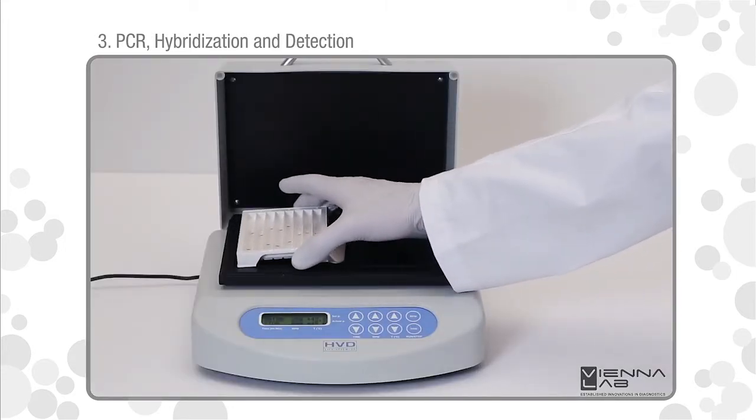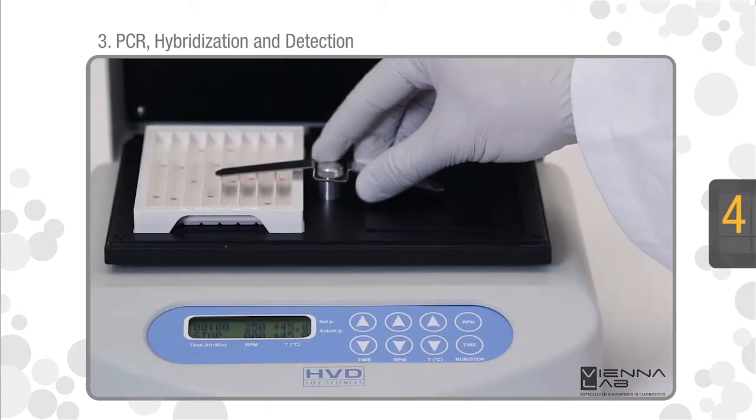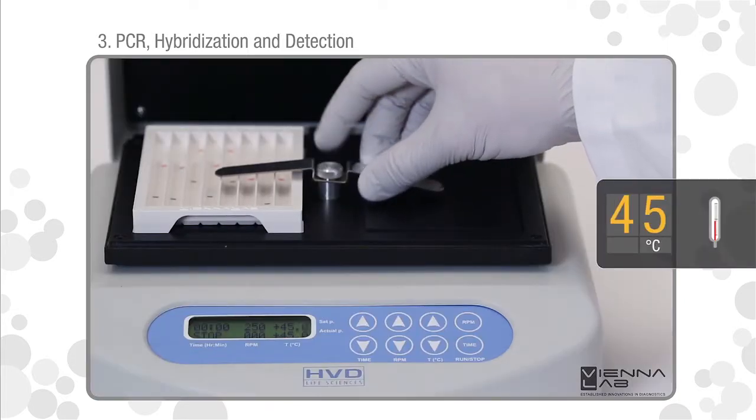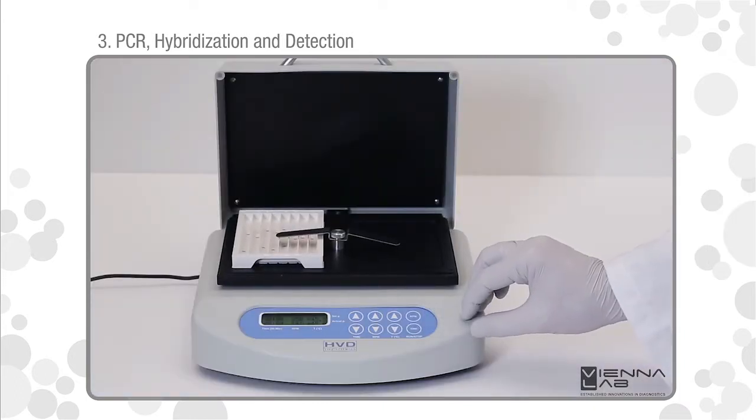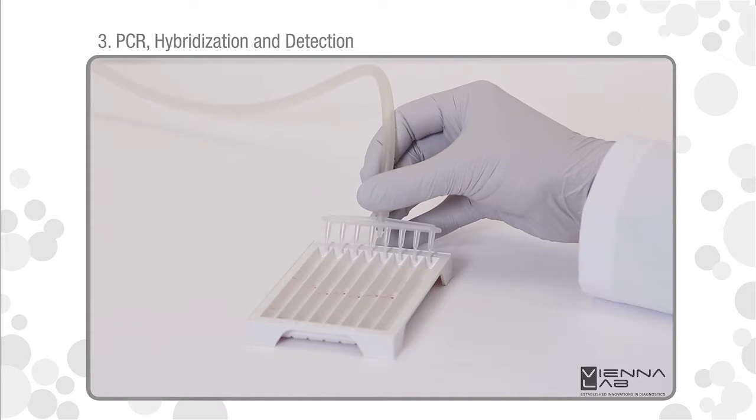You can use a thermo shaker with heated lid instead of a water bath. Set temperature to exactly 45 degrees Celsius and incubate for 30 minutes. Do not use air-based hybridization devices because of insufficient heat transmission.